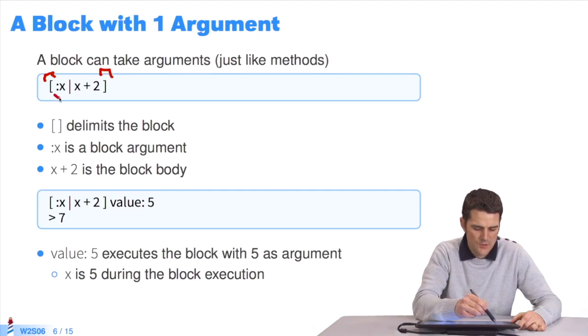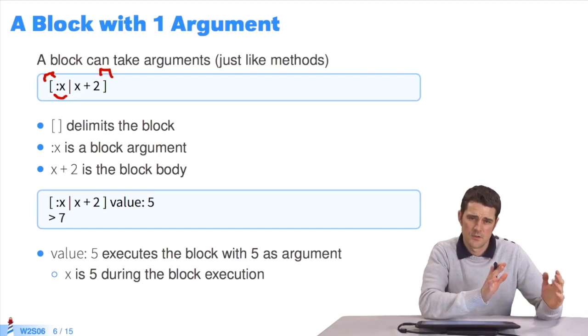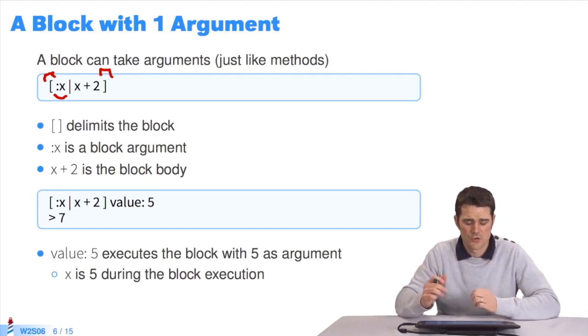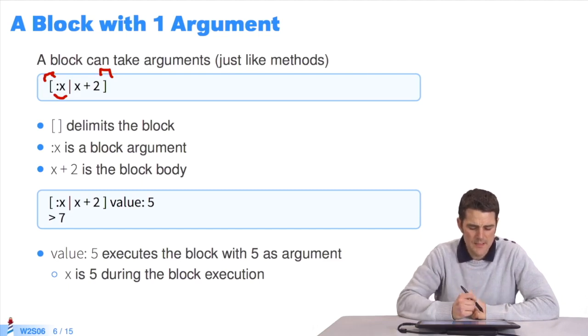All the arguments are prefixed by a colon. Then there's this symbol, a pipe. It separates the argument declaration from the block's body, the expressions it contains. The argument in this example is x. x plus 2 is the only expression in the block.